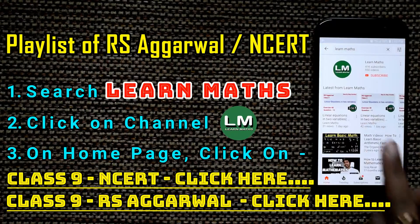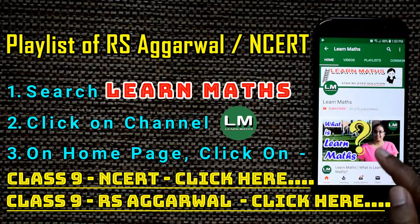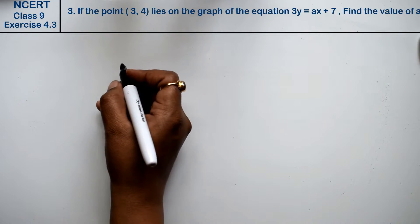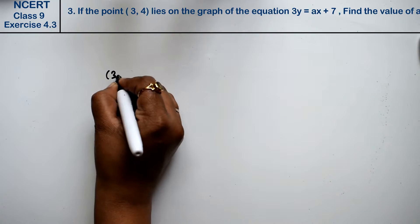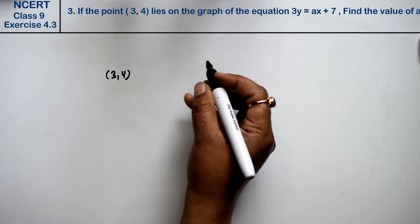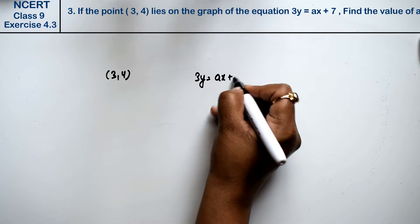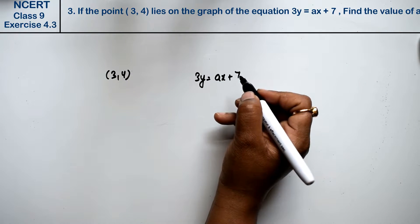Let's do question number third of exercise 4.3, linear equations in two variables. The question is: if the point (3, 4) lies on the graph of the equation 3y = ax + 7, find the value of a.